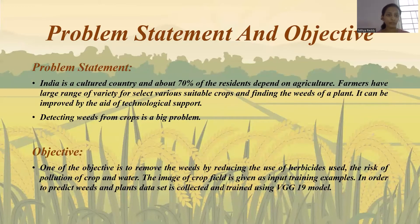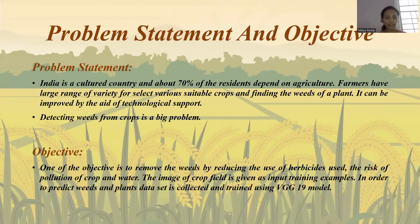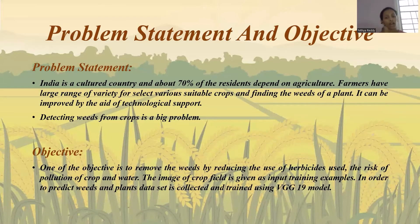The problem statement is that in India, almost 70% of the people depend on agriculture. Farmers deal with a large variety of crops and need to find and remove weeds in order to increase crop yield — this is the biggest problem identified. The objective is to identify these weeds from the crop field so that farmers can use this system to locate and remove them easily by spraying pesticides or other methods, helping the main crop grow in larger quantities.